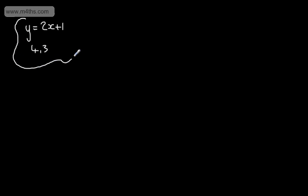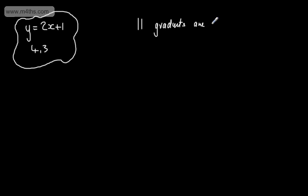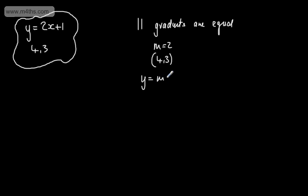We have a line and we have a point. If we consider the gradient of a parallel line, it will be the same — gradients are equal. So we have a value m, the gradient, and that is 2. We have a point that it goes through, which is (4, 3), so all we need is the equation of a straight line. We can use y is equal to mx plus c.